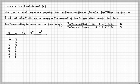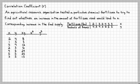Let's multiply x times y: 2 times 4 is 8, 1 times 3 is 3, 3 times 4 is 12, 2 times 3 is 6, 4 times 6 is 24, 5 times 5 is 25, and 3 times 5 is 15. So we've filled that column up.